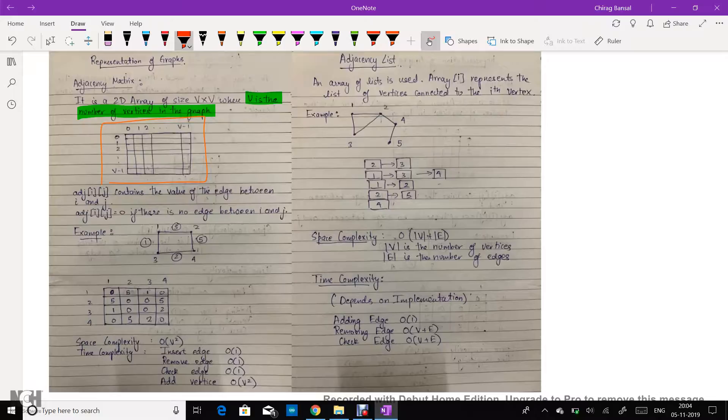In the adjacency matrix, the value i comma j contains the value of the edge between i and j. If the value of i comma j is zero, this means that there is no edge between i and j. Let's look at an example, consider this graph.